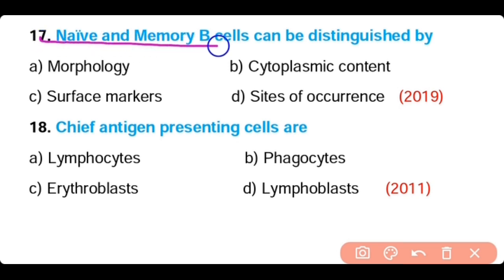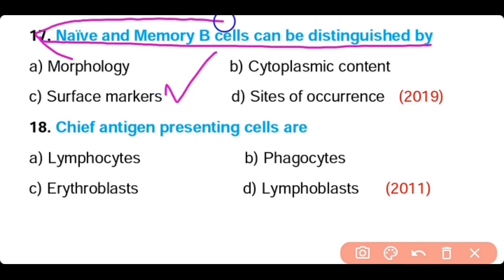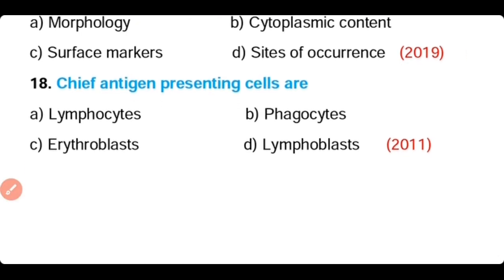Question number 17. Naive and memory B cells can be distinguished by: morphology, cytoplasmic content, surface marker, or site of occurrence. The correct answer is Option C. Naive and memory B cells can be distinguished by the presence of different surface markers. Naive cells are those which have not encountered any antigen.